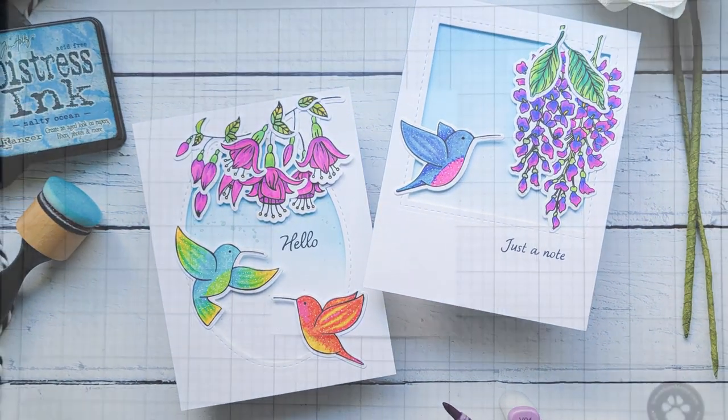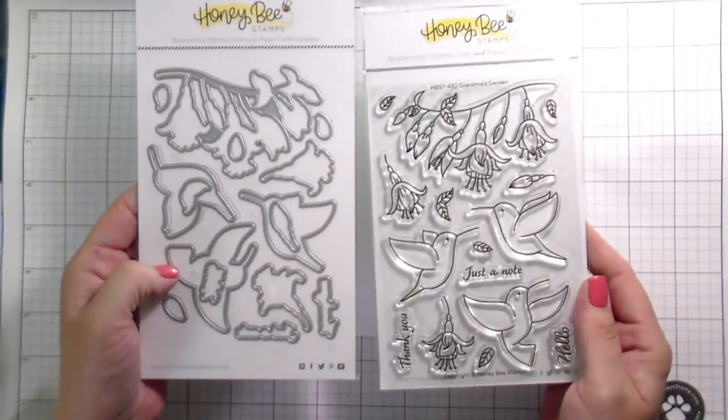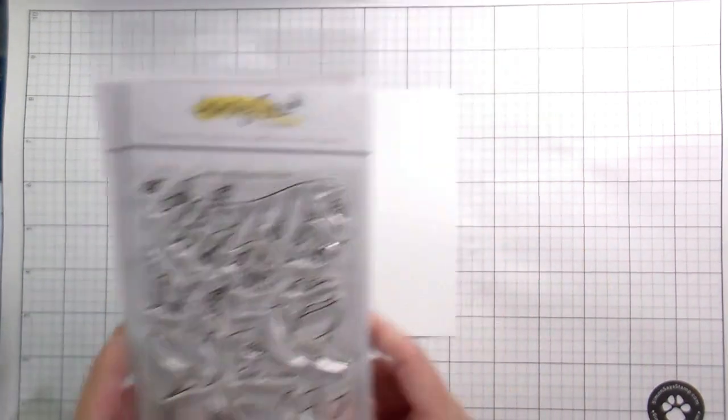Hi guys, it's Kelly here and I'm back with another video for Honey Bee Stamps. Today we're going to be working with the Grandma's Garden set, the Stamps and Dyes, as well as the Layering Wisteria.